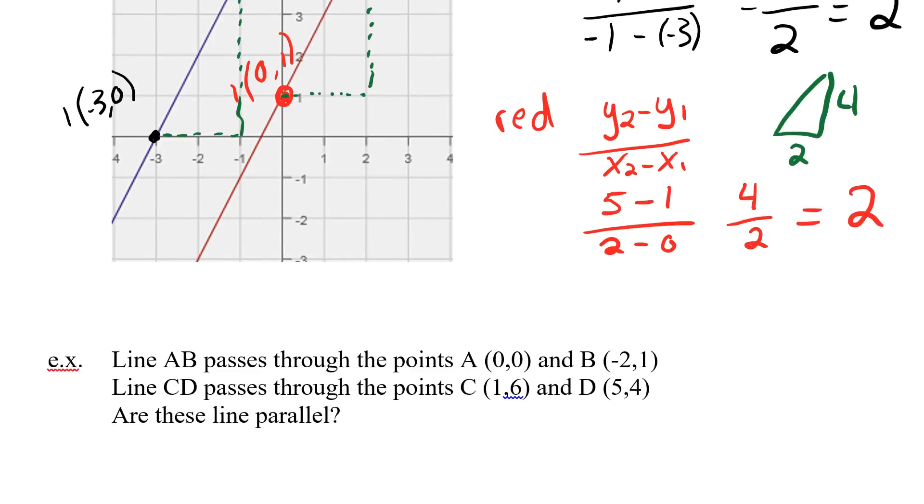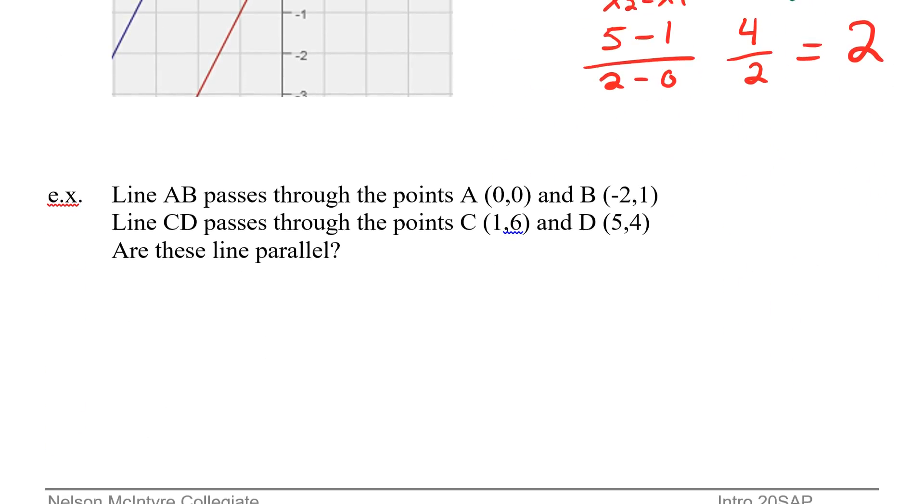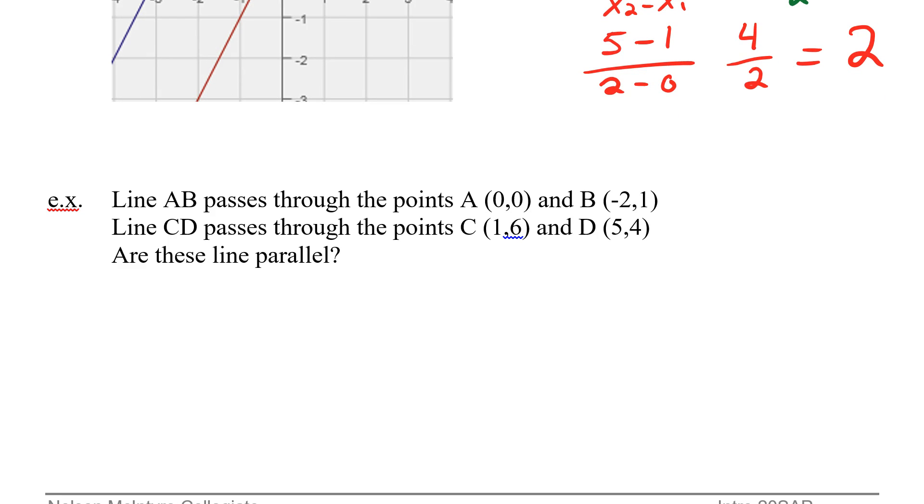So now let's look at this in terms of no more graph, just some points. Line AB passes through the points 0,0 and negative 2,1. And line CD passes through 1,6 and 5,4. Are these lines parallel?